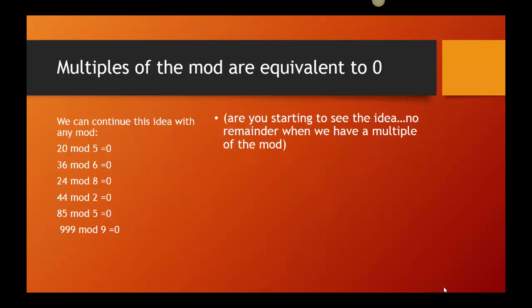Alright. So, using this idea that multiples of the mod are equal to 0 is really, really going to be helpful. So, before we jump into it, let's just make sure we see some more examples. Because it doesn't matter, last time I was doing 3, I could use any mod. So, I could do 20 mod 5, I would get 0. 36 mod 6, here's 0. 24 mod 8, there it is again, 0. 44 mod 2 is 0. 85 mod 5 is 0. 999 mod 9 is 0. So, are you starting to see the idea? No remainder when we have a multiple of the mod.